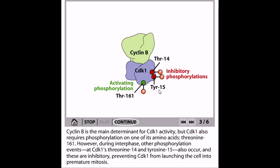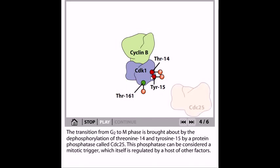These phosphorylation events are inhibitory, preventing CDK1 from launching the cell into premature mitosis. Whenever threonine 14 and tyrosine 15 are phosphorylated, this inhibitory phosphorylation blocks the cell from entering the cell cycle. The transition from G2 to M phase is brought about by the dephosphorylation of threonine 14 and tyrosine 15.